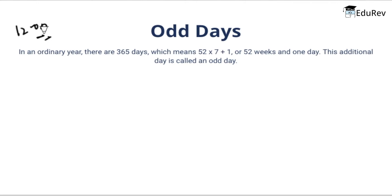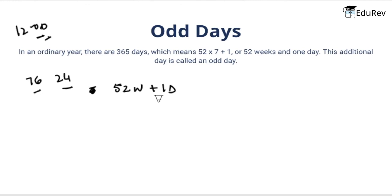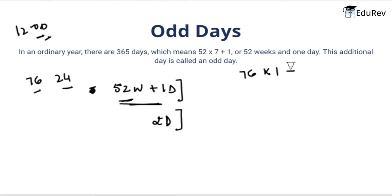Every 100 years have 76 ordinary years and 24 leap years. Odd days in an ordinary year is 52 weeks plus 1 day, and odd days in a leap year is 52 weeks plus 2 days. So odd days in 100 years is 76×1 plus 24×2, which equals 124 odd days. This can also be written as 17 weeks plus 5 days. So every 100 years will have 5 odd days.